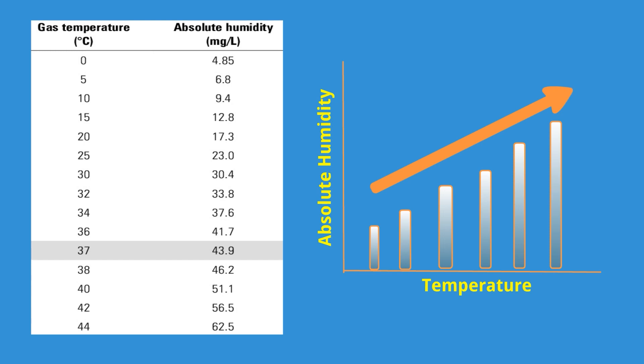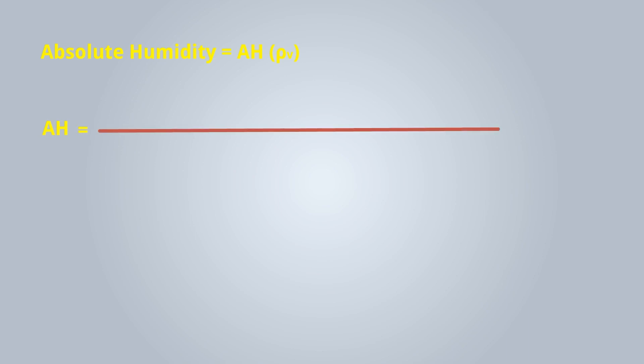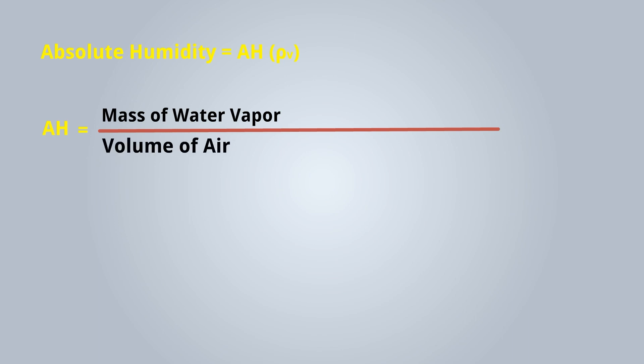Absolute humidity is abbreviated as AH and is also written as rho-v. The formula is: absolute humidity (rho-v) equals the mass of water vapor divided by the volume of air, that is rho-v = mv / v.